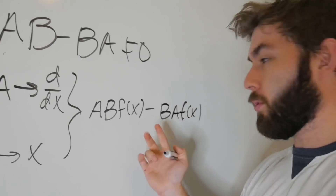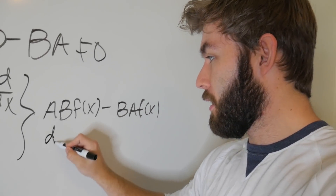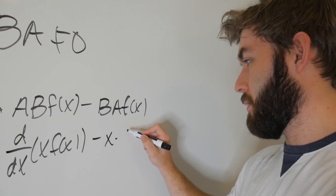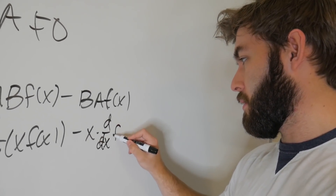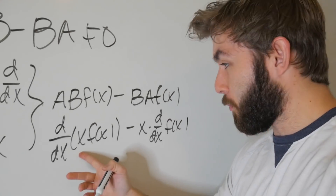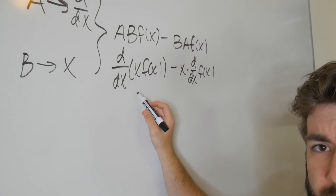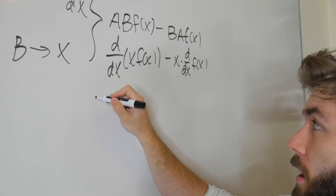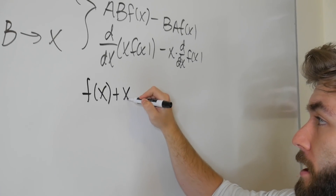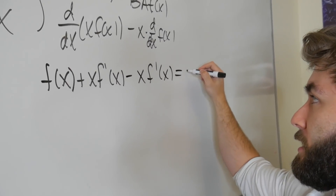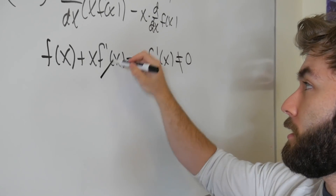If we do AB acting on a function minus BA acting on a function, this will not generally give the same thing. B applied first gives d/dx times x·f(x), minus x times d/dx of f(x). This incorporates the product rule and gives F(x) plus x·F'(x) minus x·F'(x), leaving an extra factor — it's not equal to zero.